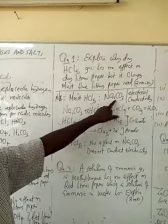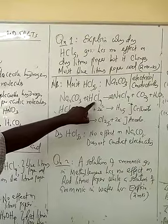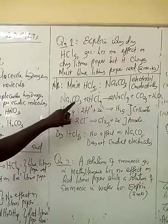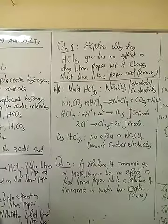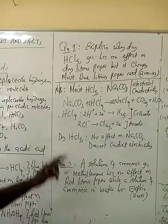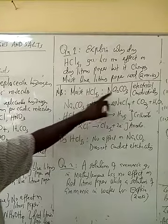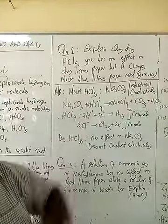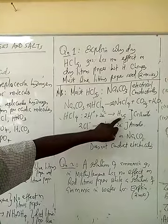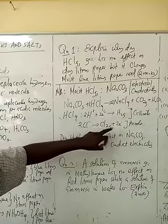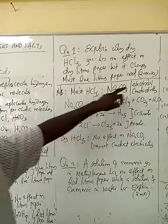Dry hydrogen chloride has got no effect on sodium carbonate. When dissolved in water, it produces hydrogen ions which will react with carbonate, which will be seen as bubbles of carbon dioxide gas. Moist hydrogen chloride will also conduct electricity, making hydrogen gas produced at the cathode while chlorine gas is produced at the anode. Dry hydrogen chloride gas does not conduct electricity because it is in molecular form and does not have ions to move to the electrodes.